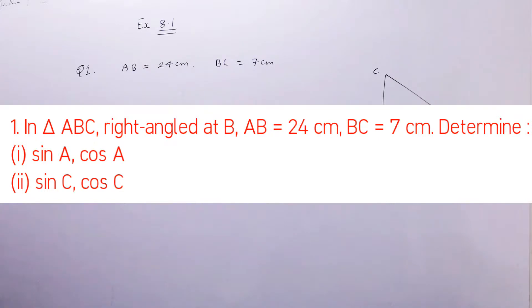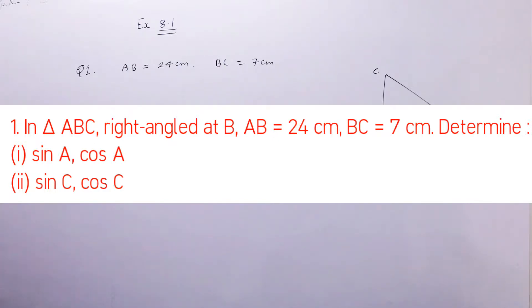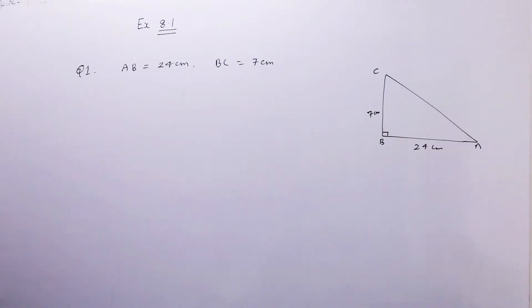Question number 1: In triangle ABC, right angle at B, AB is equal to 24 cm, BC equal to 7 cm. Determine: sin A, cos A, sin C, cos C.